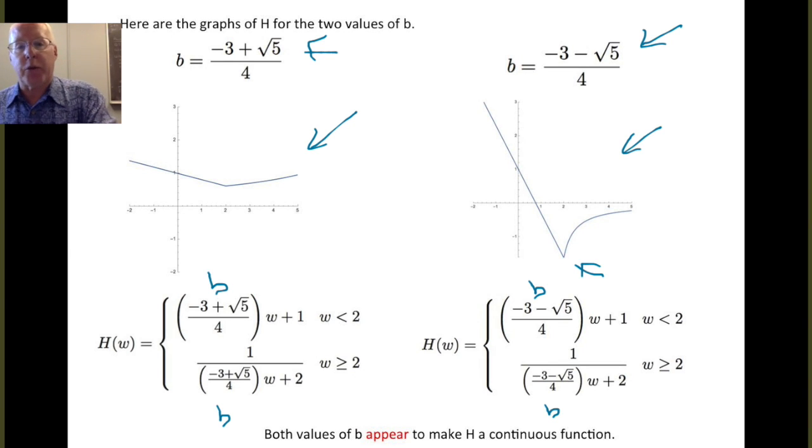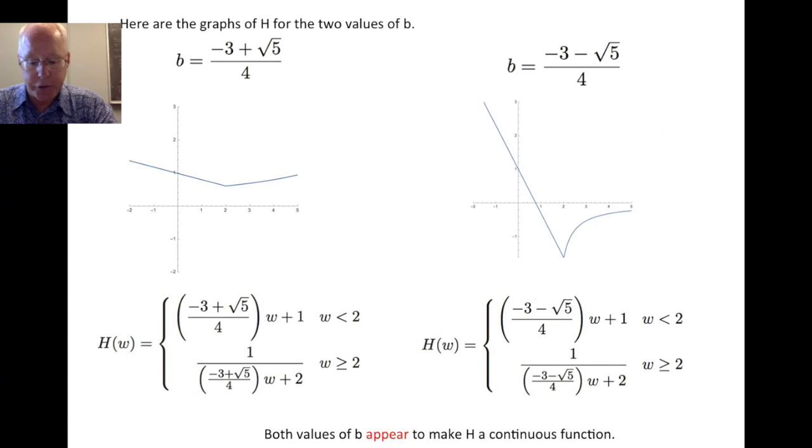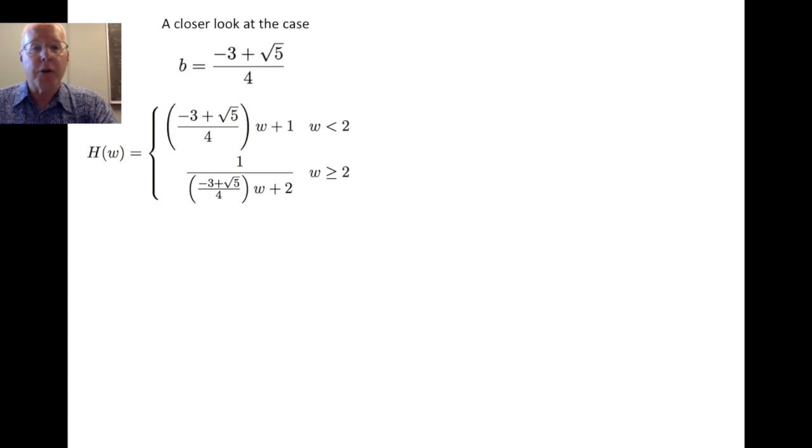Now, as is often the case when dealing with graphs, you've got to be a little careful. Graphs show you a little part of a function, but not everything. And it turns out that one of these functions is continuous for all real numbers, and the other is not. So let's do some further investigations to see what the situation is here. First, a closer look at the first case. If b equals minus 3 plus root 5 over 4, we saw h is defined as follows.